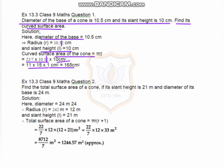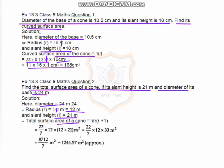Question number two: find the TSA of a cone if the slant height is 21 meters and the diameter is 24 meters. Diameter is 24 meters, so the radius becomes 24/2 which equals 12 meters. Slant height is given as 21 meters. TSA of cone equals π r (r + l), which is 22/7 into 12 into (12 + 21).